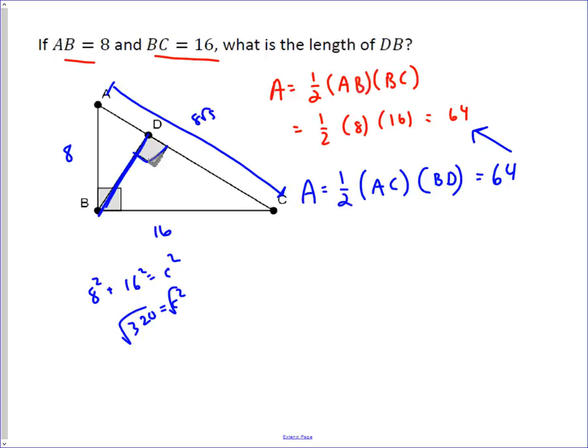So now when you solve this, you get one-half times eight root five times BD equals sixty-four. The one-half and the eight cancel to four, so we divide both sides by four root five.